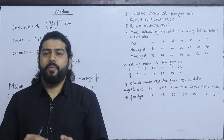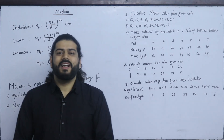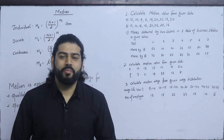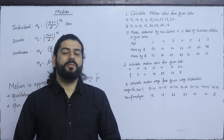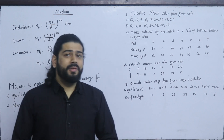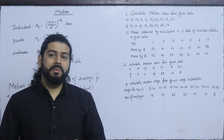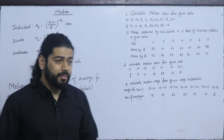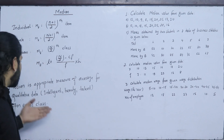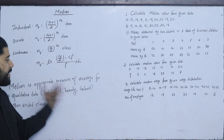Now we are going to talk about what is appropriate. In the previous class we talked about mean — arithmetic mean, geometric mean, and harmonic mean. But what is the median? Median is an appropriate measure of central tendency or average.